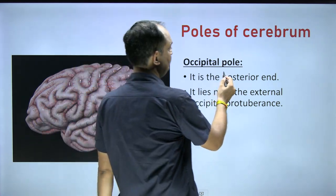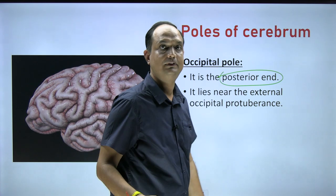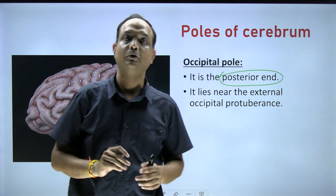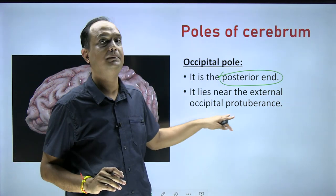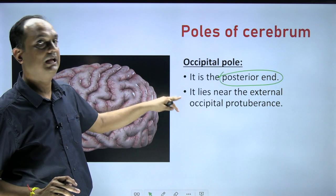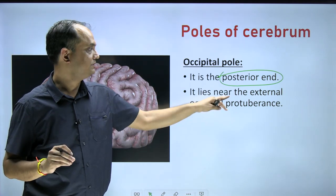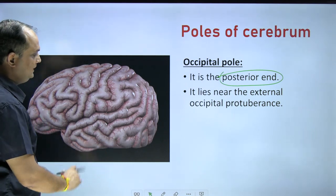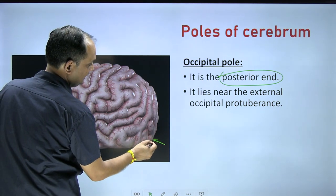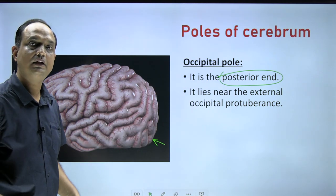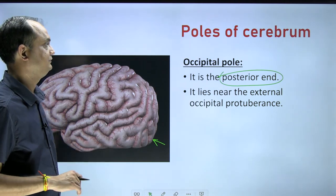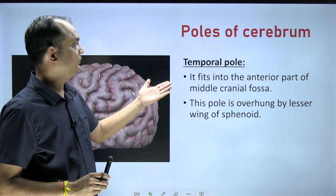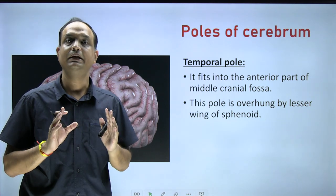The occipital pole is the posterior end of the cerebral hemisphere. On the occipital bone there is a bony prominence known as the external occipital protuberance. The occipital pole lies near the external occipital protuberance of the occipital bone. In this image, this point is your occipital pole, or the posterior end of the cerebral hemisphere.